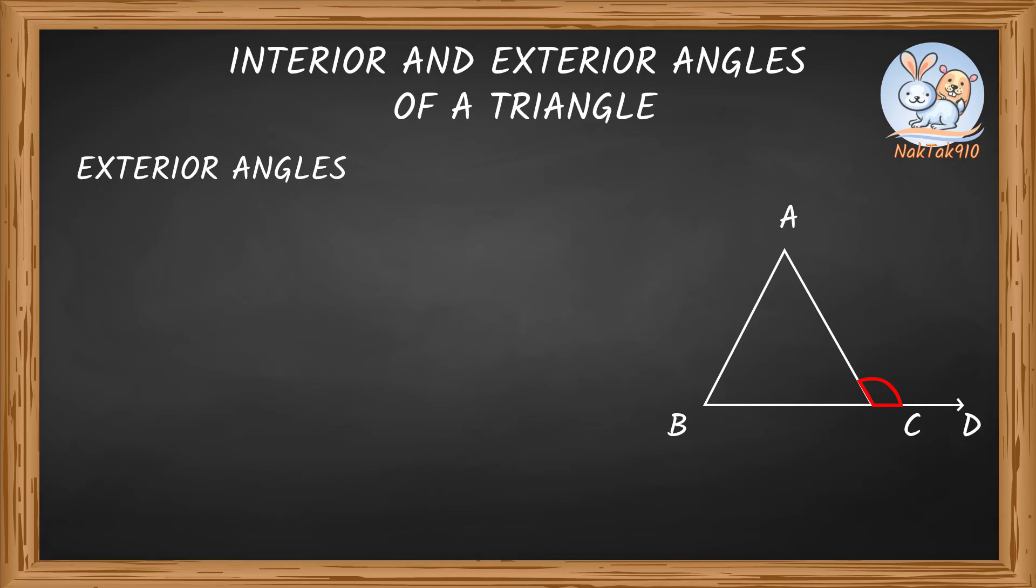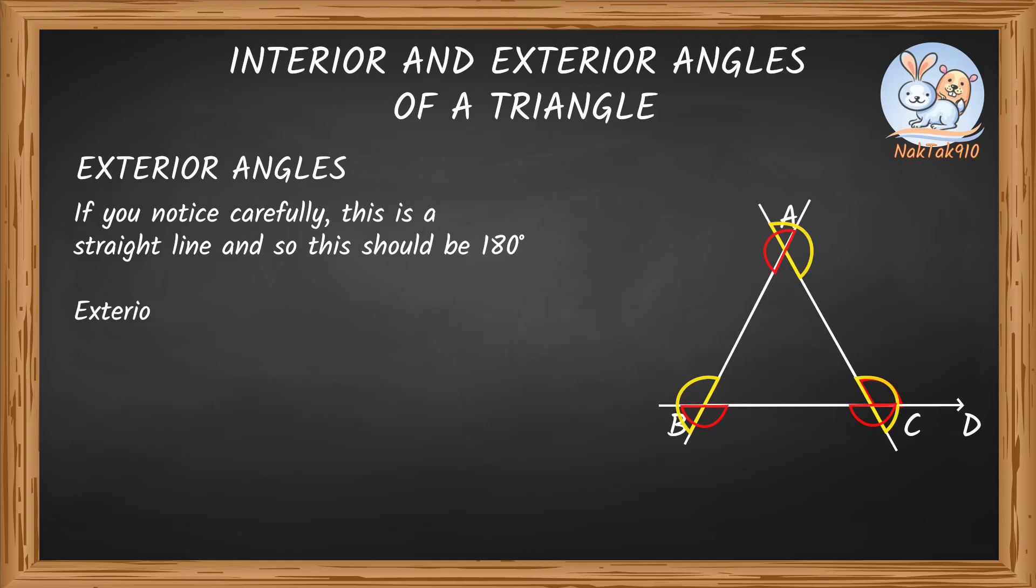So there will be two exterior angles formed at every vertex. That's right! Every triangle has six exterior angles, two at each vertex. If you notice carefully, this is a straight line and so this should be 180 degrees.